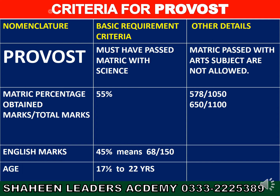Dear students, the main requirement for Provost NCO: you must have passed Matric with Science. First division is not required — 55% marks are sufficient to be eligible. If your marks are below 55%, you will not become a Provost NCO. The age criteria for Provost NCO is from 17.5 years to 20 years. We shall proceed to the next slide.